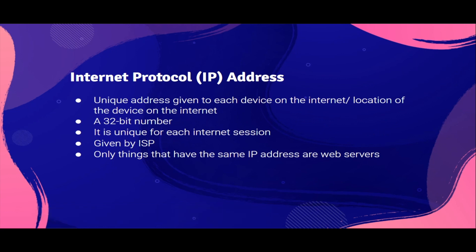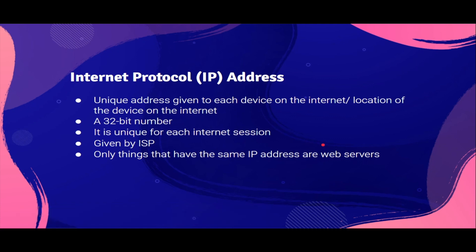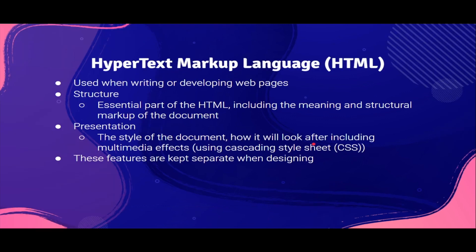Internet protocol address — basically, IP address. This is a unique address given to each device on the internet; that is, the location of a device on the internet. It's unique for each internet session and is given by the internet service provider. It's a 32-bit number. Only web servers have the same IP address all the time. For any other device, it would change for each internet session. Next, hypertext markup language — HTML. This is used when writing or developing web pages.